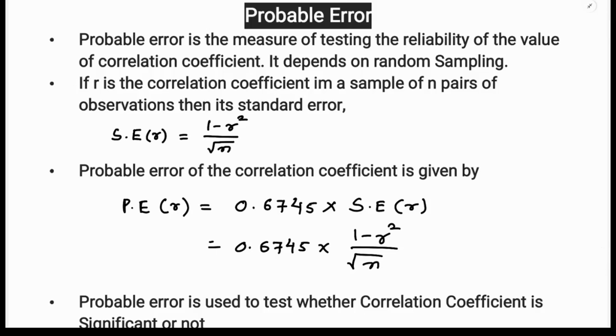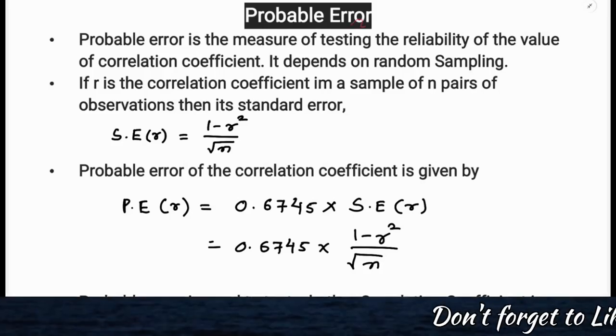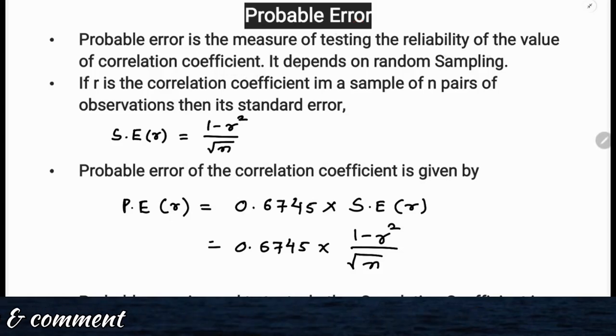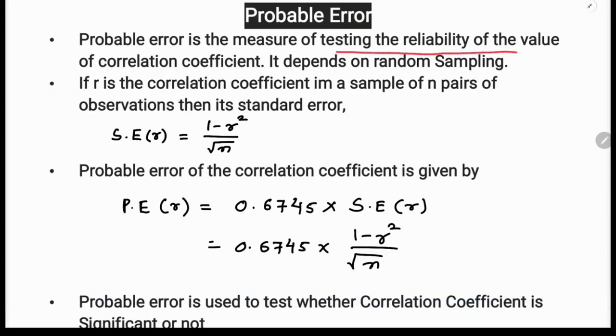Hello everyone, in this class we are going to discuss probable errors in correlation coefficient. So what is probable error? Probable error is the measure of testing the reliability of the value of correlation coefficient. It depends on random sampling.